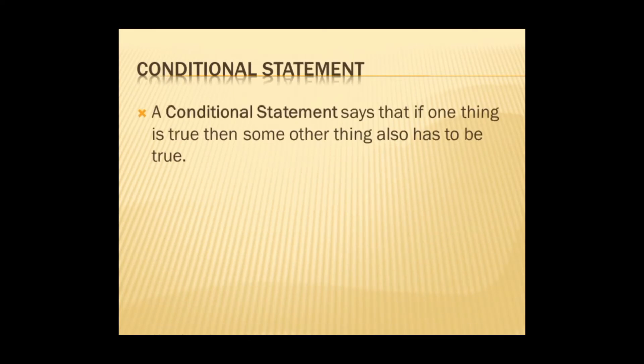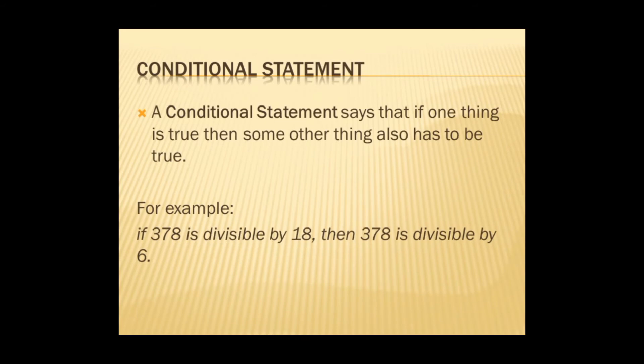A conditional statement says that if one thing is true, then some other thing also has to be true. For example, if 378 is divisible by 18, then 378 is divisible by 6. To identify a conditional statement, we look for the word 'if' and the word 'then'.